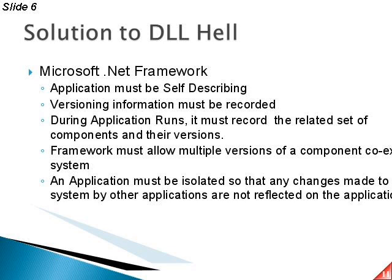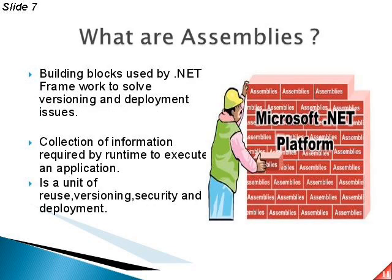The framework allows multiple versions of a component to coexist. For example, aptec.dll version 1.0, version 2.0, and version 3.0 can all be available simultaneously. Applications must be isolated so that changes in the system are not reflected in other applications. Assemblies are the building block used in the .NET Framework, basically for solving versioning and deployment issues, containing all the information required at runtime to execute an application.